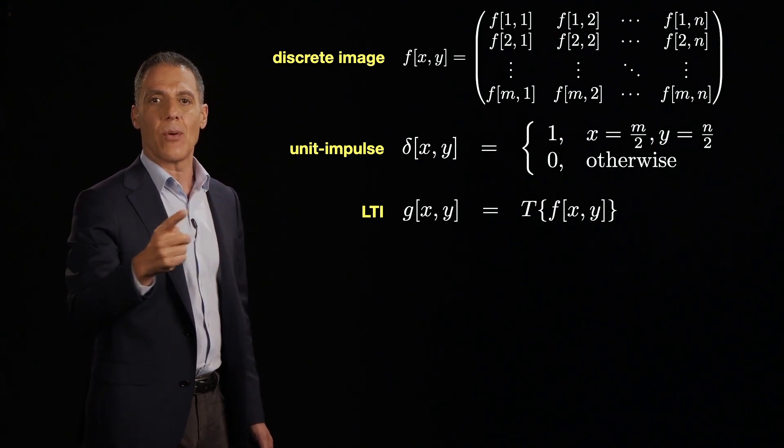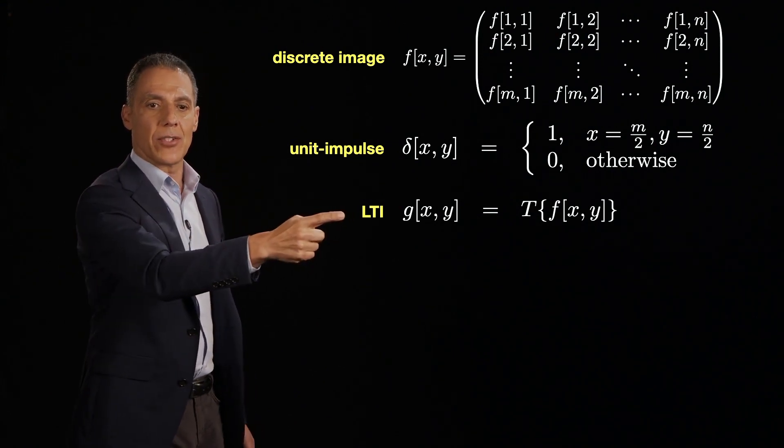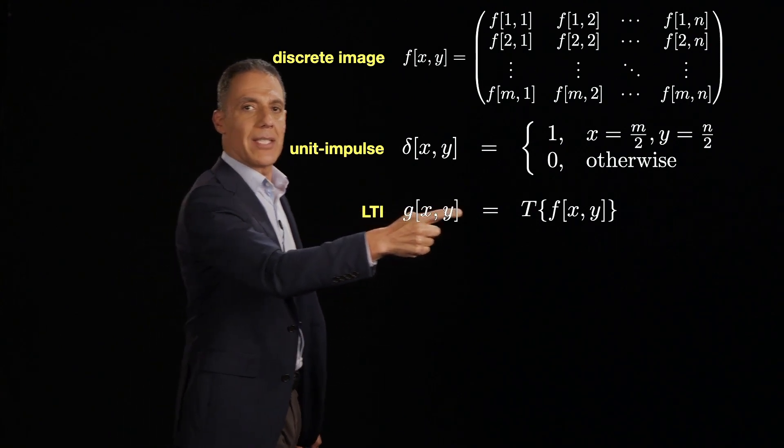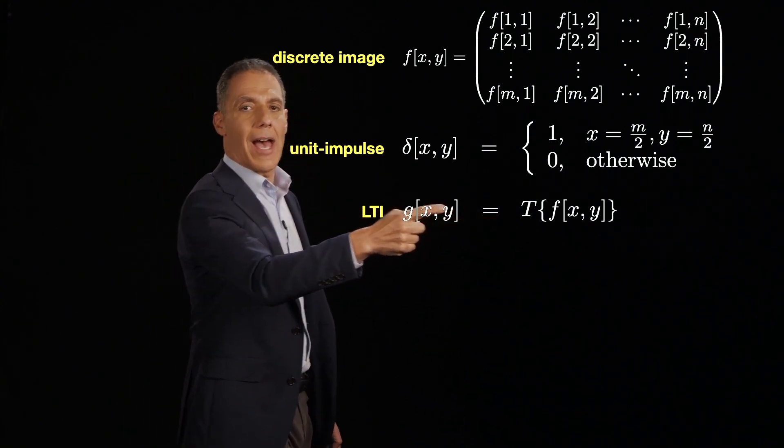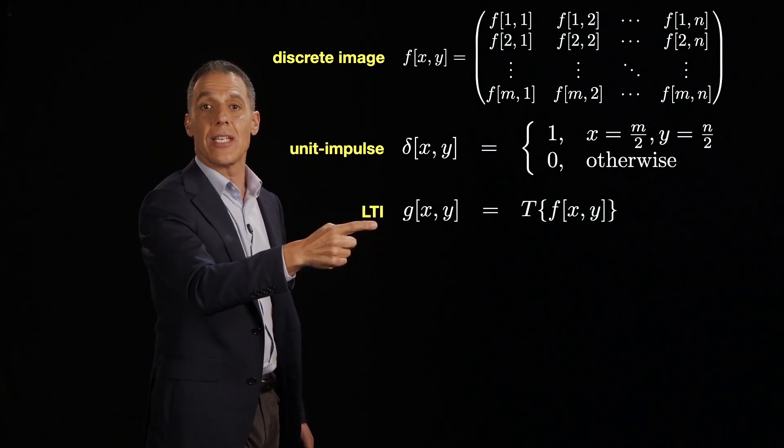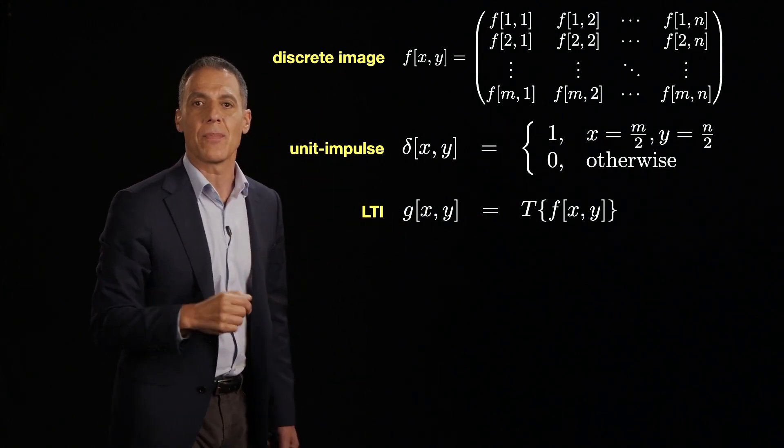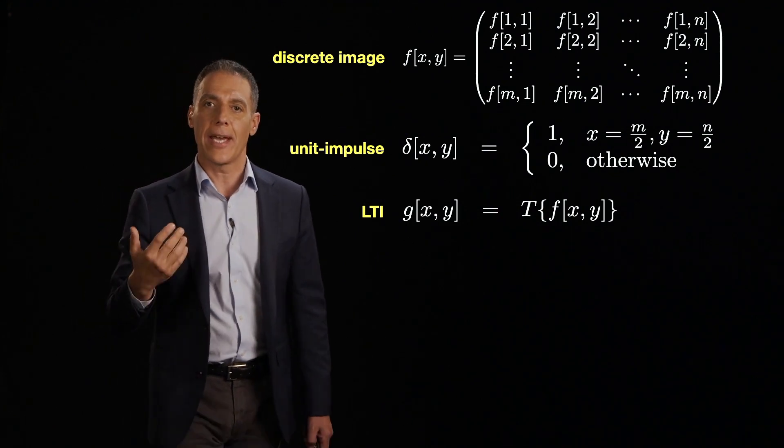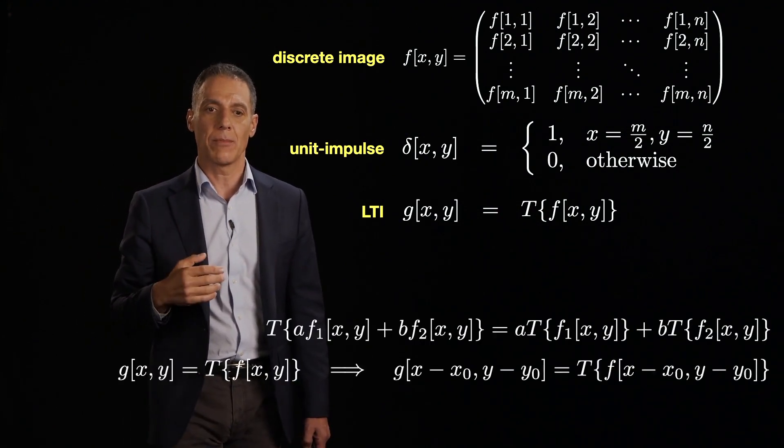Let me define now a linear time invariant system. So remember that T is the system, f[x,y] is the input image, and g[x,y] is the output image. T, of course, is linear and time invariant, just like before. And so now we're going to play the same game.